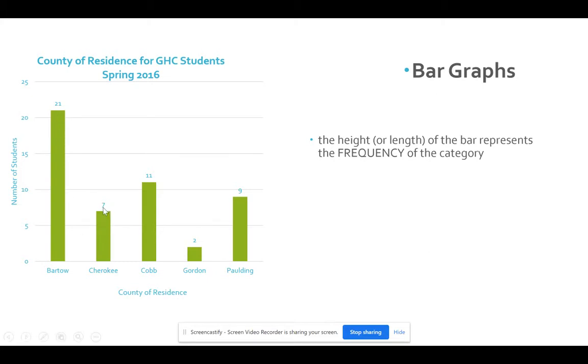There were seven students surveyed that lived in Cherokee. So that gives you, it helps you out because you don't have to kind of guesstimate where it is.